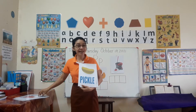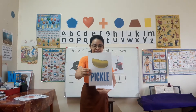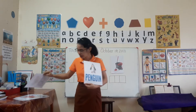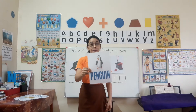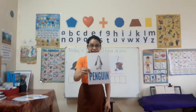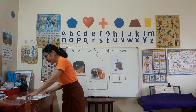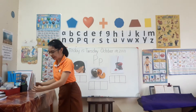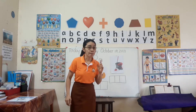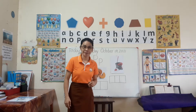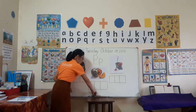And pickle. Pickle. And the last one is penguin. Penguin. So we've learned the P-P-P sound. Very good, children. Not B — but P. Okay, now let's go to our activity.